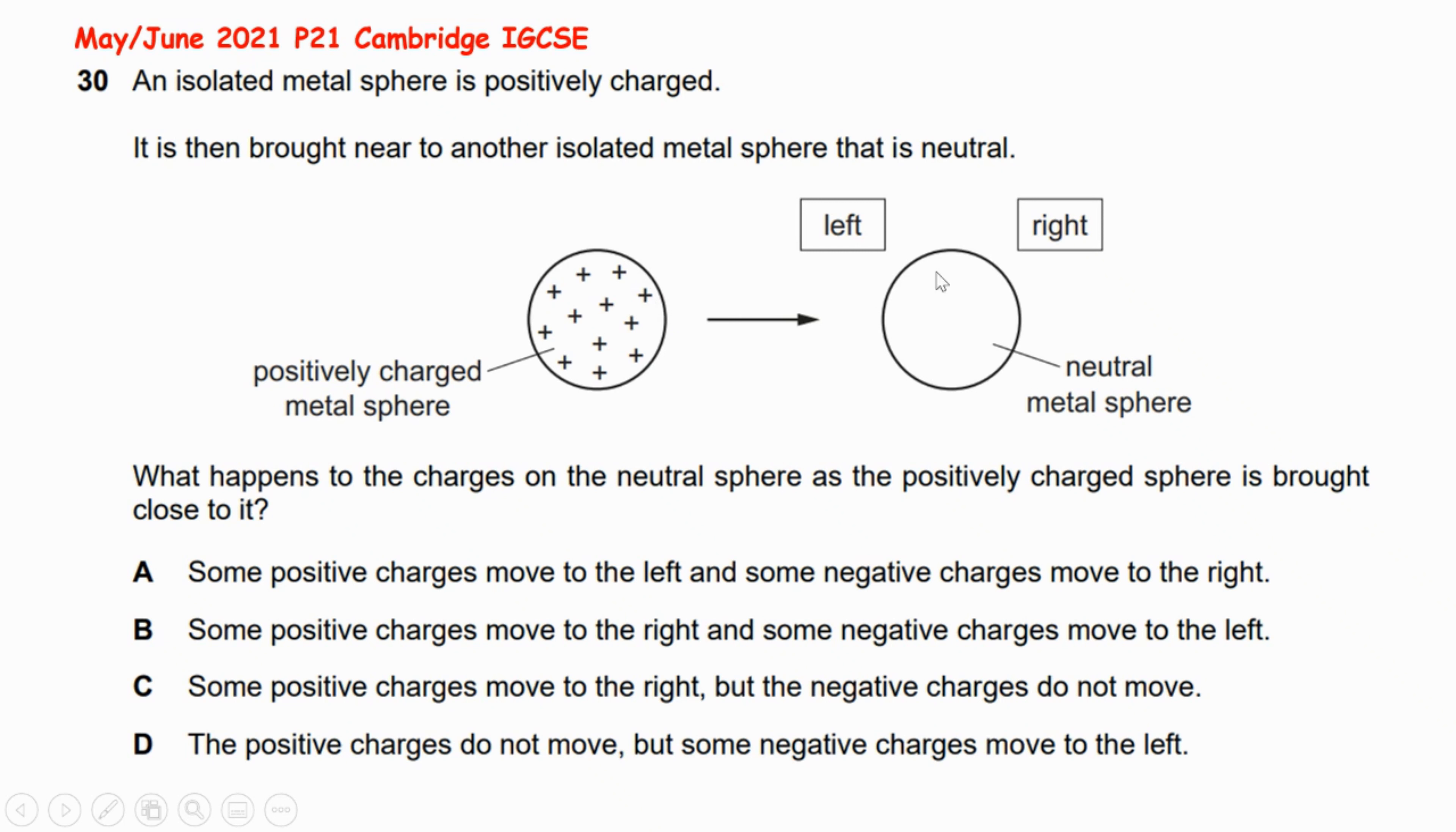causes the charges on the neutral sphere to be rearranged, because the function of the charged sphere now works as an inducer. So you will see the negative charges aligned at the left side here, and leaving behind the positive charges aligned at the right side.